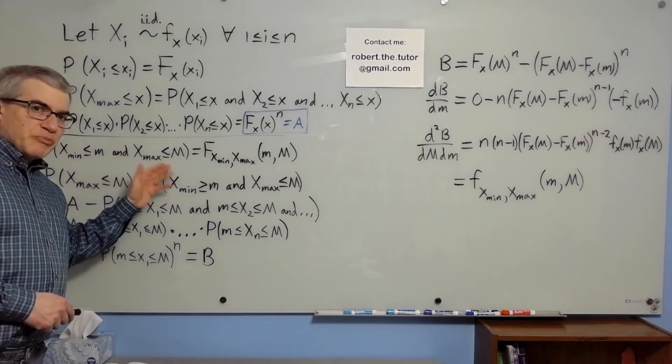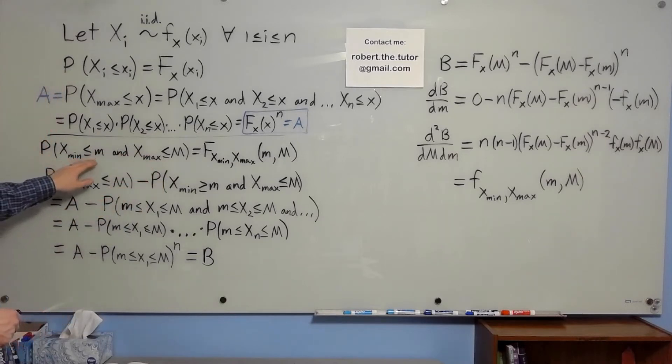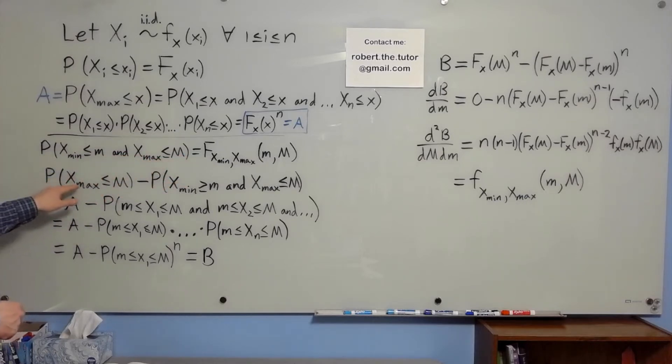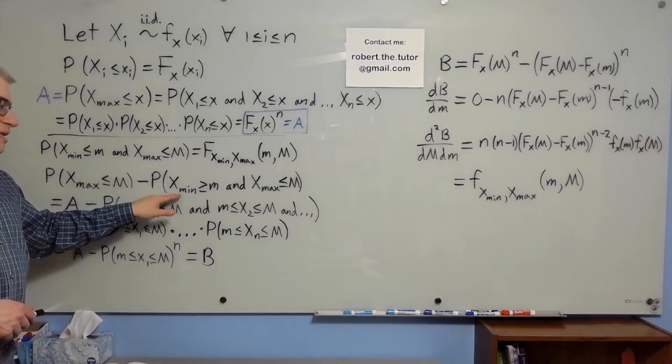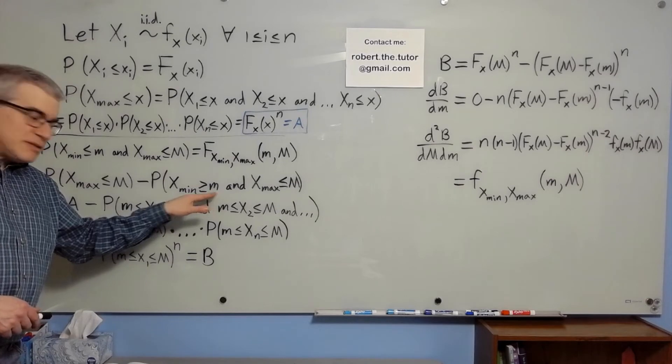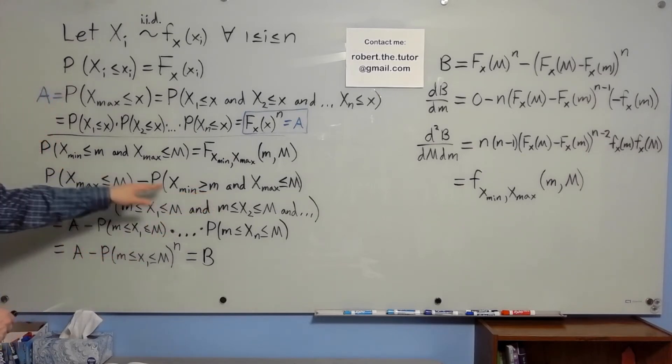There are different ways to slice up probabilities. The easy way for this one is to say the probability that the min is less than little m and the max is less than big M is the probability that the max is less than big M minus the probability that the max is less than big M and the x min failed—it's greater than little m. Written that way,